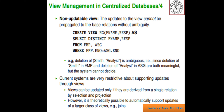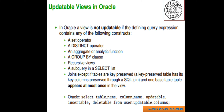Current systems are very restrictive about supporting updates through views. Views can be updated only if they are derived from a single relation by selection or projection. However, it is possible to automatically support updates of a larger class of views, for example joins. In Oracle, a view is not updatable if the defining query contains any of the following: a set operator, DISTINCT operator, aggregate or analytic function, GROUP BY clause, recursive view, subquery in the selection list, or a join except if tables are key-preserved and one base table tuple appears at most once in the view.